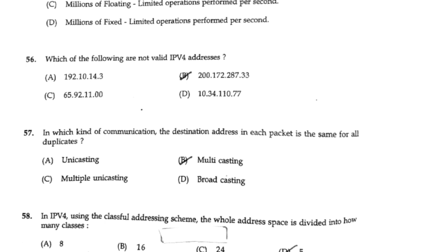In which kind of communication is the destination address in each packet the same for all duplicates? Answer option B: multicasting.